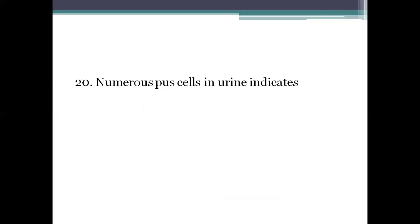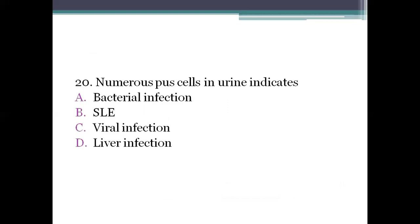Next question: numerous pus cells in urine indicates? Option A: bacterial infection. Option B: SLE (systemic lupus erythematosus). Option C: viral infection. Option D: liver infection. The right answer is option A, bacterial infection. Thank you.